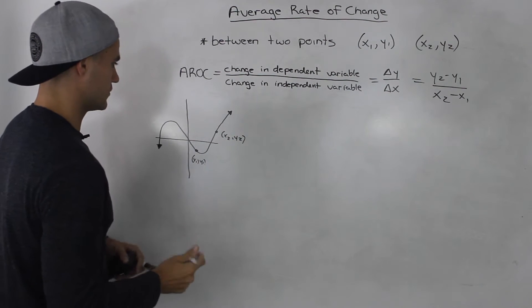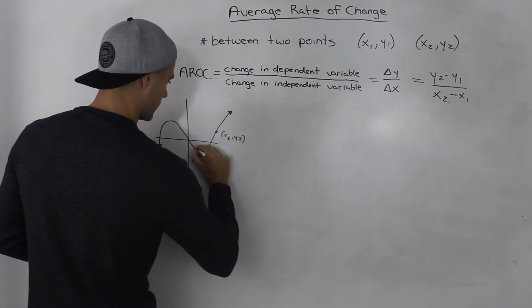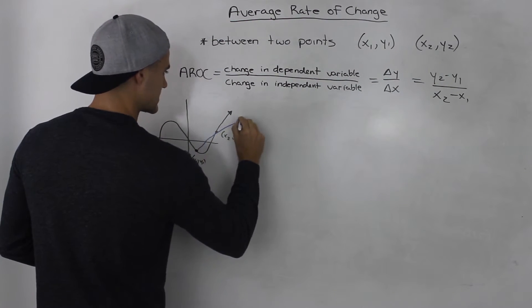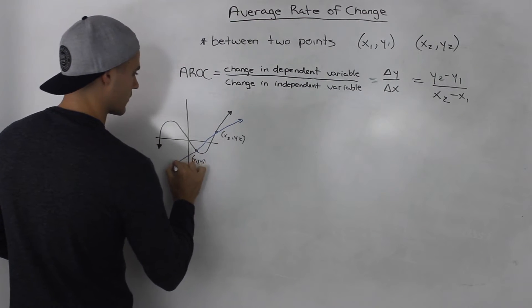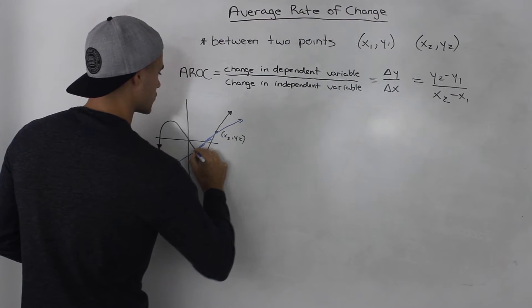What we would do is find the slope of the line that connects these two points, right? That should be a straight line. So pardon my drawing there.